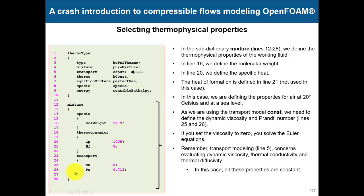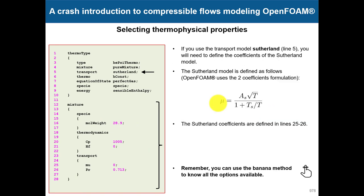In the mixture sub-dictionary, you define the actual fluid properties: molecular weight, CP, heat of formation if used, dynamic viscosity Mu, and Prandtl number. In this case these are defined as constant — the values shown here are for air at 20°C. If you want a different transport model for viscosity, you have options like the Sutherland model, polynomials, and others.